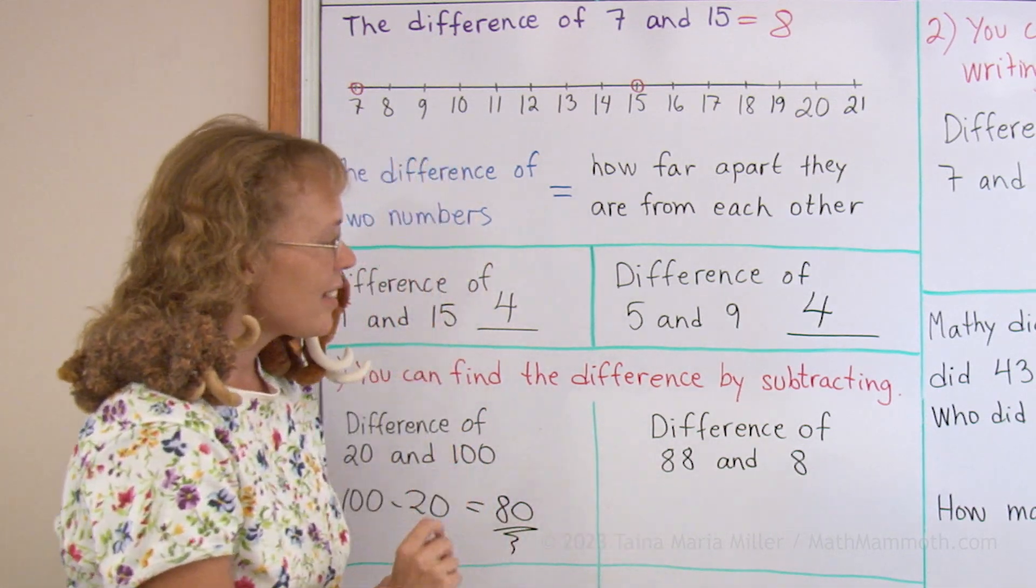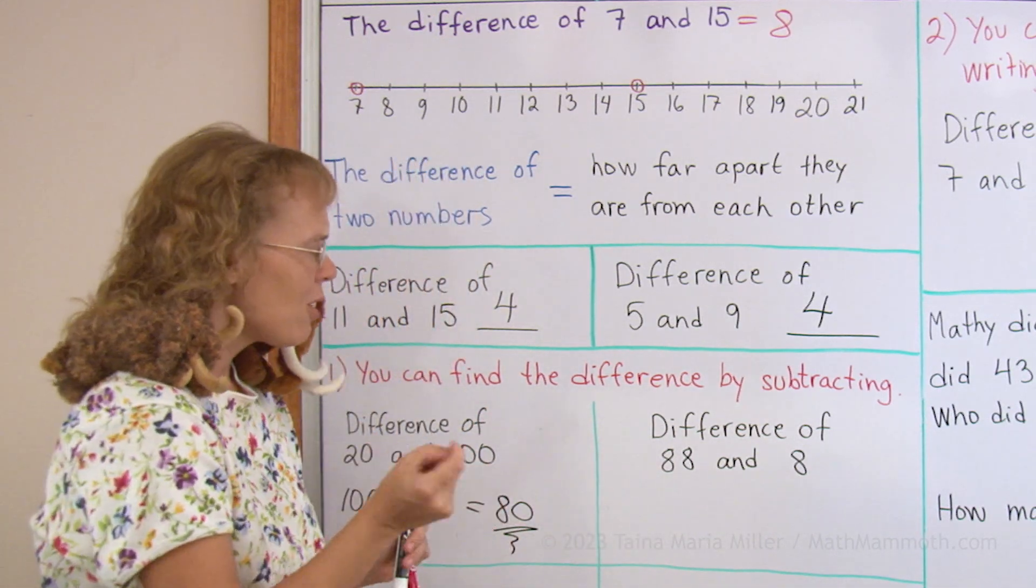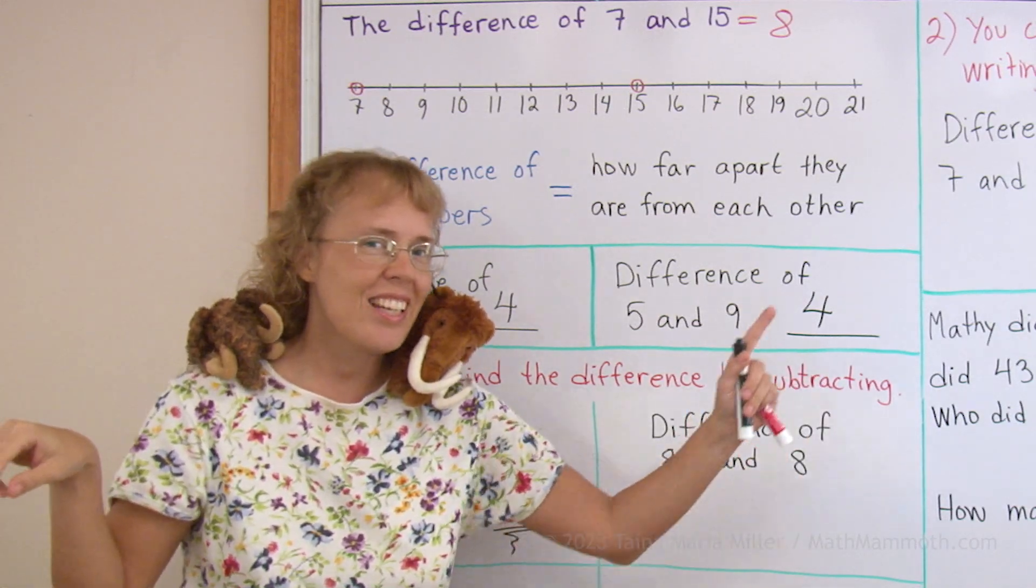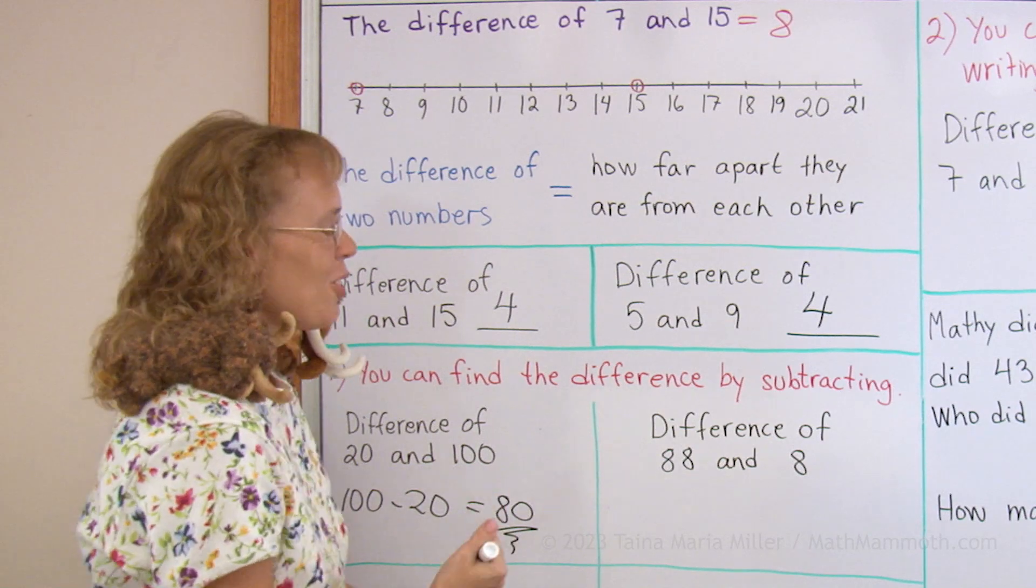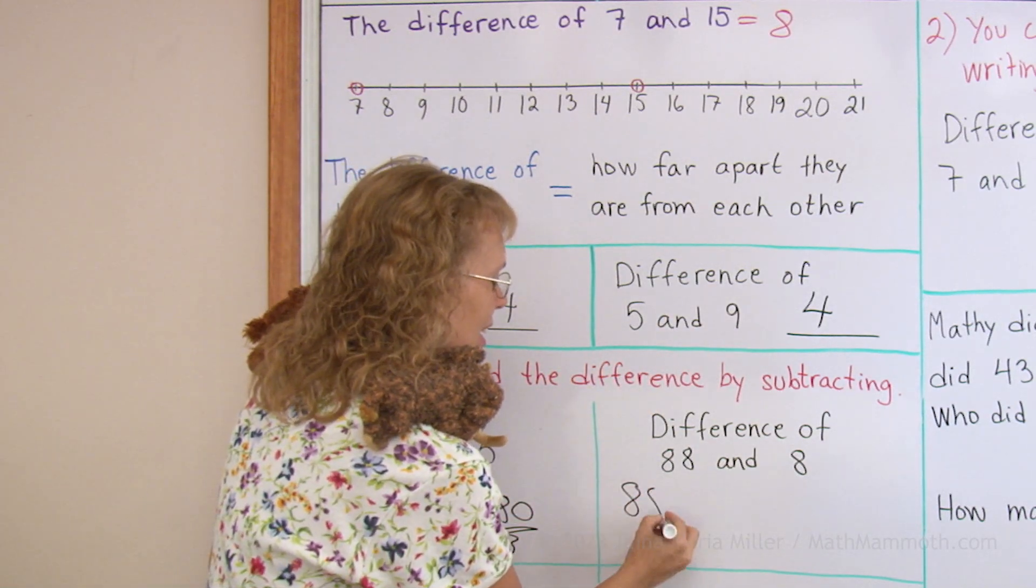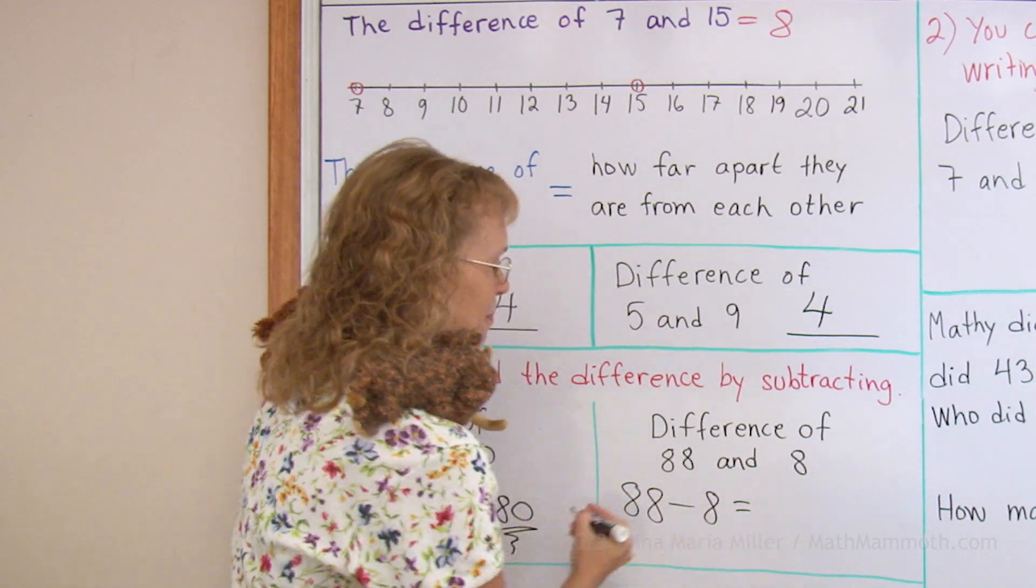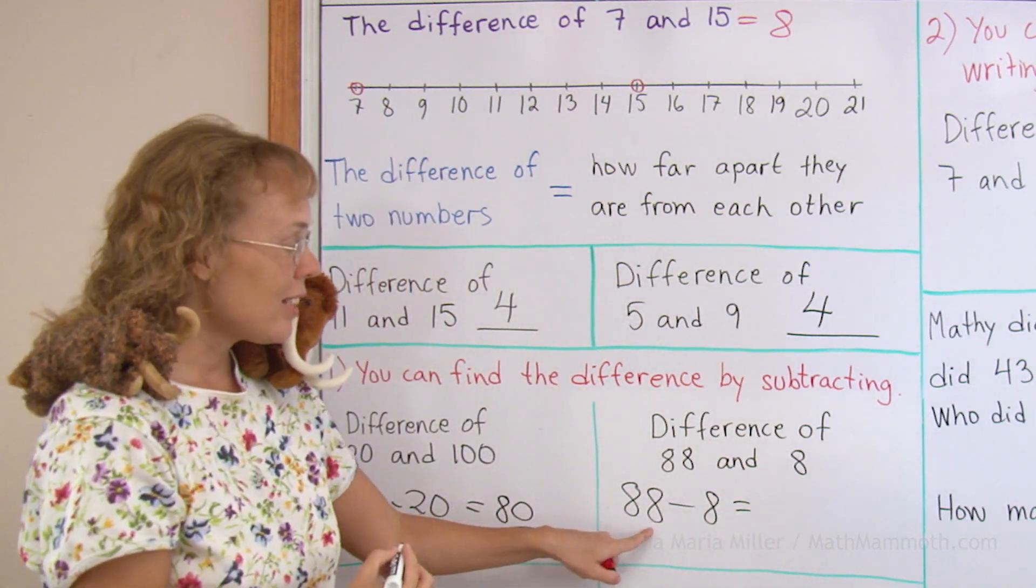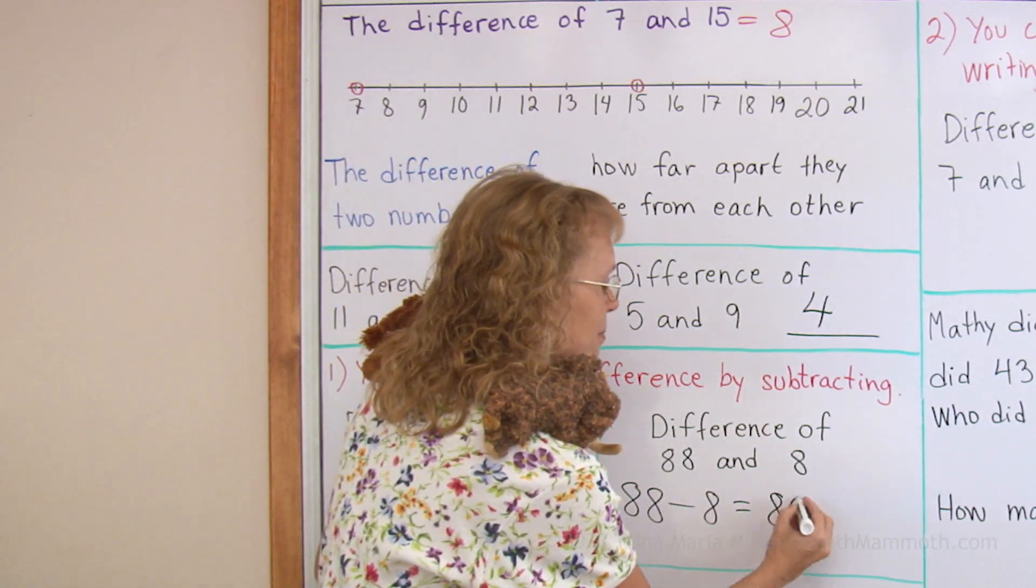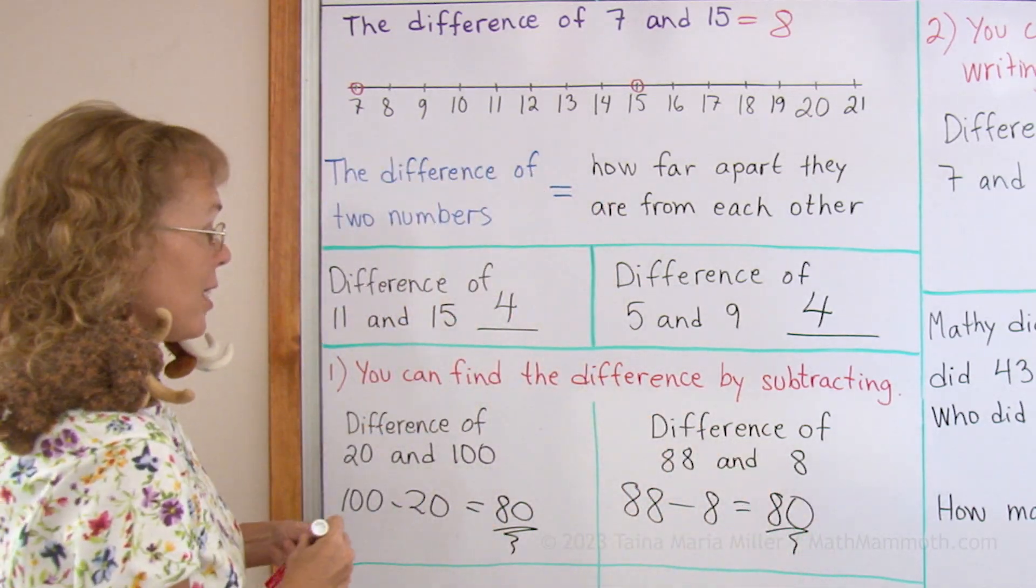The difference of 88 and 8. Again, those two numbers are quite far apart on the number line. 8 and then 88. So you don't want to start counting jumps on the number line, but you can subtract. 88 minus 8. And here's 8 minus 8 and the 8 tens, we get 80. 80 steps again.